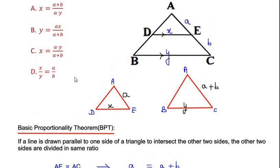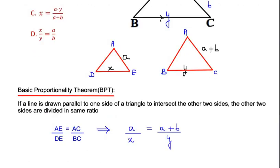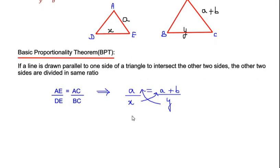Now, if we look at the given options, we have either x or y on the left-hand side of the equation. Let me go for the cross multiplication. That is, I will multiply x with a plus b and y with a. We get a times y equals x multiplied with a plus b.